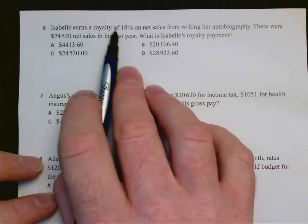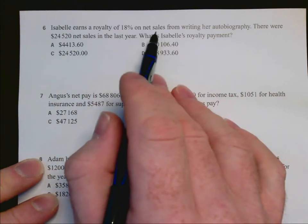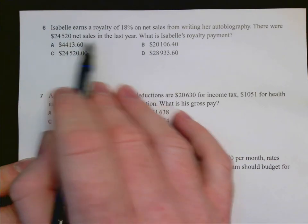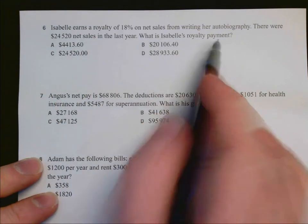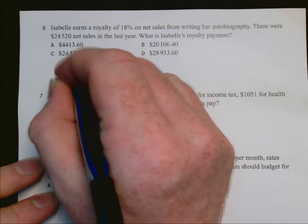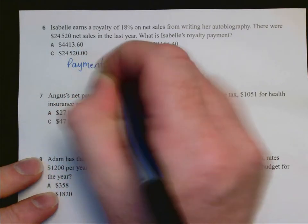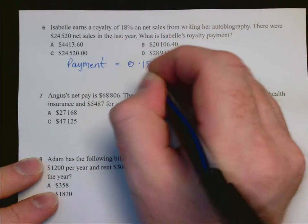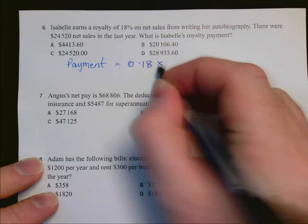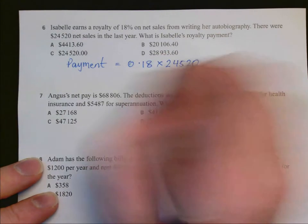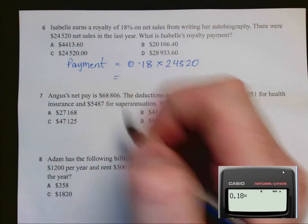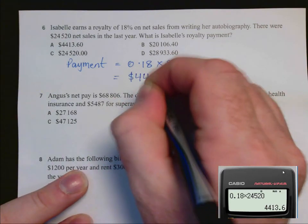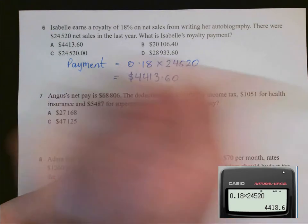In this question, Isabel earns a royalty. So a percentage on sales. So very much like commission. There were $24,520 in net sales in the last year. What is Isabel's royalty payment. So her payment, there's no retainer or anything like commission. It's just the percentage on sales. So 18% as a decimal to put in our calculator is 0.18 times the total sales. And on our calculator we find that that is equal to $4,413.60 which is A.